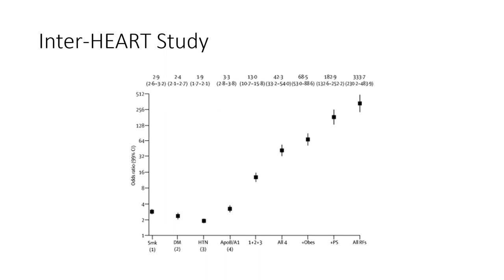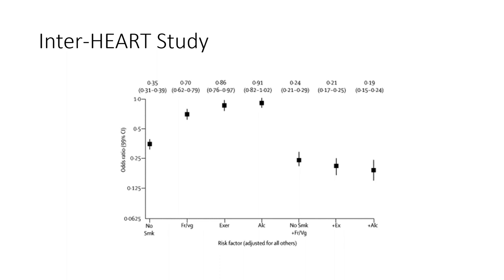We can look at several studies examining the evidence for cardiac rehab. A famous one is the InterHeart Study, which looked at different disease risk factors. It found that the risk of an acute myocardial infarction is associated with exposure to multiple risk factors — smoking, diabetes, hypertension, ApoB, dyslipidemia. The more risk factors people had, the higher likelihood of having an acute MI and poorer outcomes. It was a landmark study.